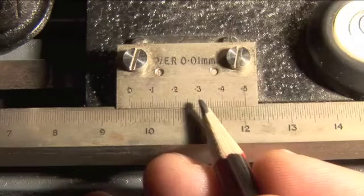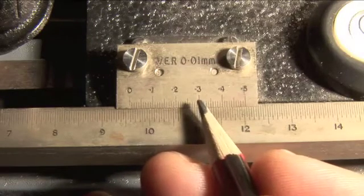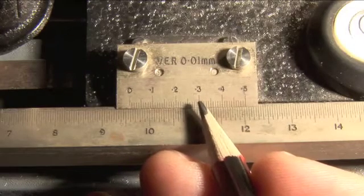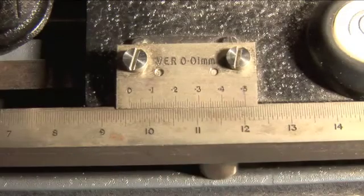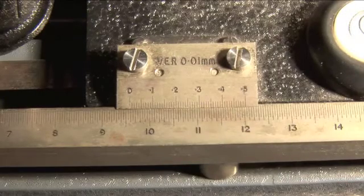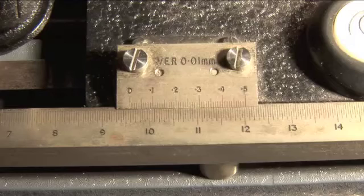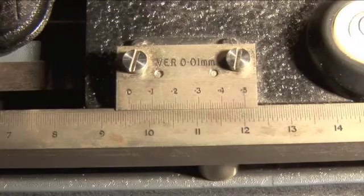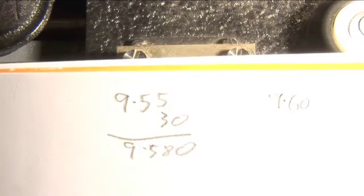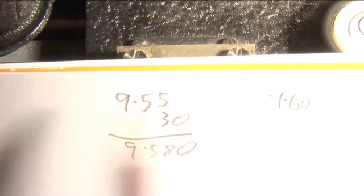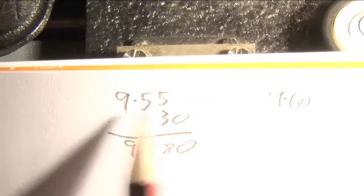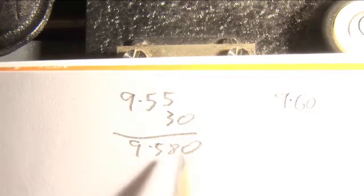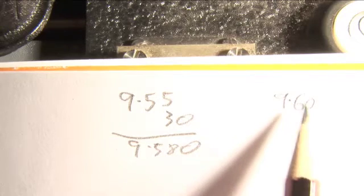So you need to add the digits three zero to nine point five five to get a number less than nine point six zero. So your final reading is going to look like this: you need to add to your original reading nine point five five the digits three zero such that the answer is less than nine point six zero.